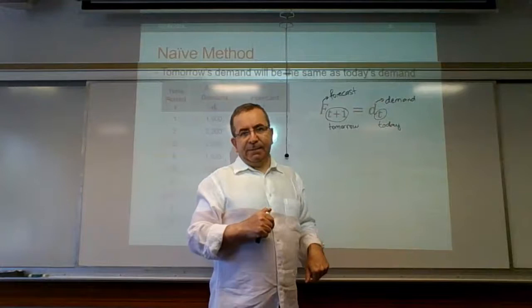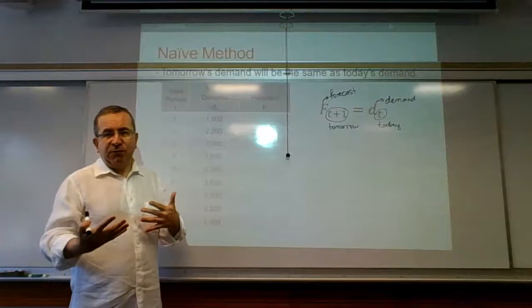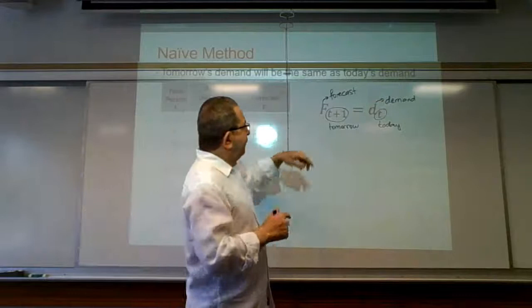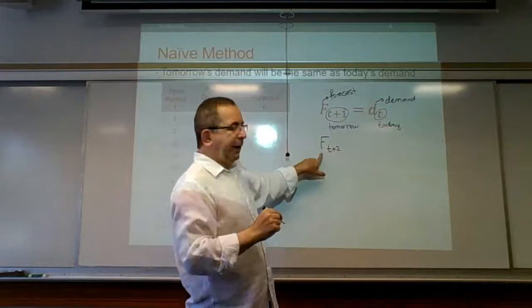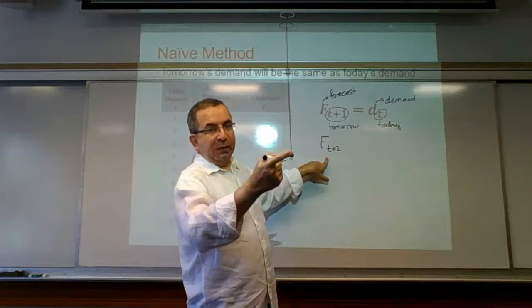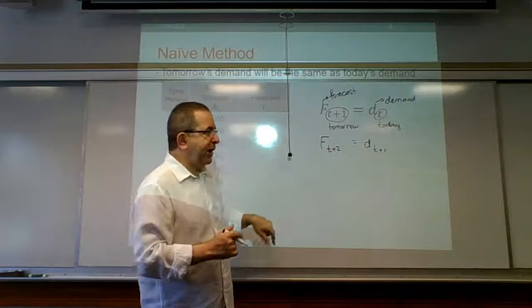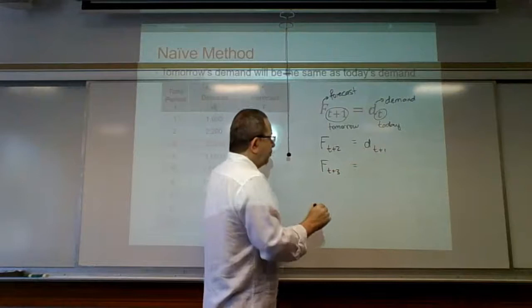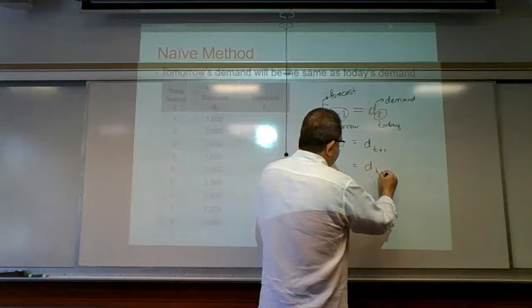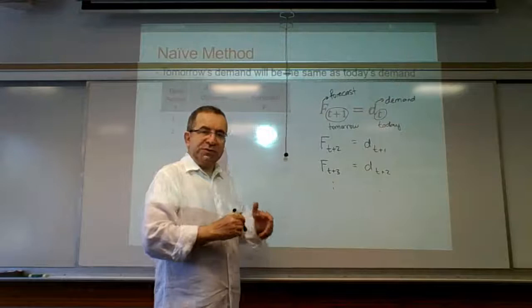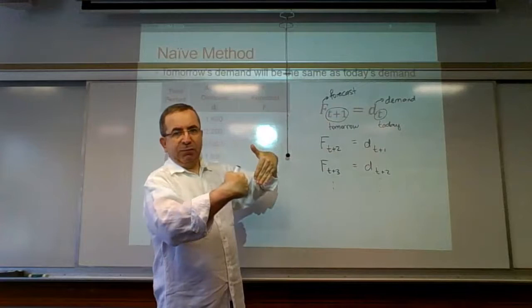Some of you may be comfortable with this subscript notation and some may not, so let me give you a few examples. F sub T+2 equals D sub T+1. F sub T+3 equals D sub T+2, and so on. The formula says: for the following period's forecast, just go back one period.